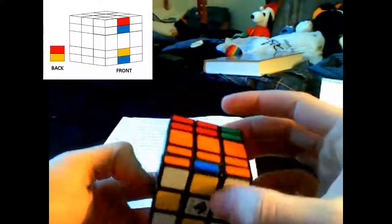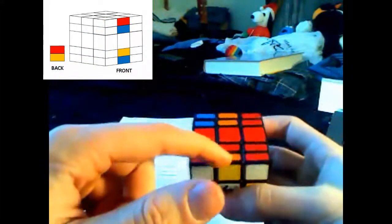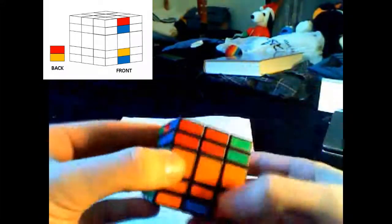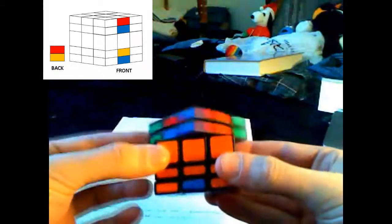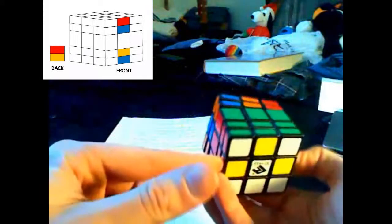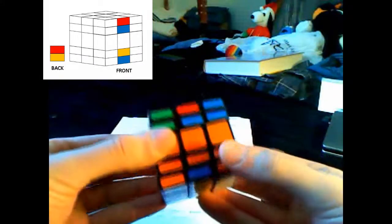If two edges happen to be opposite on the bottom side, like this one, this orange has to go here, this is the first and this is the second edge. Bring the unsolved edge above the second edge again. And then basically it's the same algorithm.